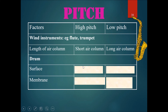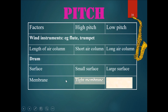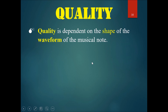For a high pitch drum, you should have a small surface, which means a smaller drum essentially. For a low pitch, use a larger surface. For a high pitch drum, you should also have a tighter membrane. For a lower pitch of a drum, you should have a loose membrane. Quality is dependent on the shape of the waveform of the musical note.